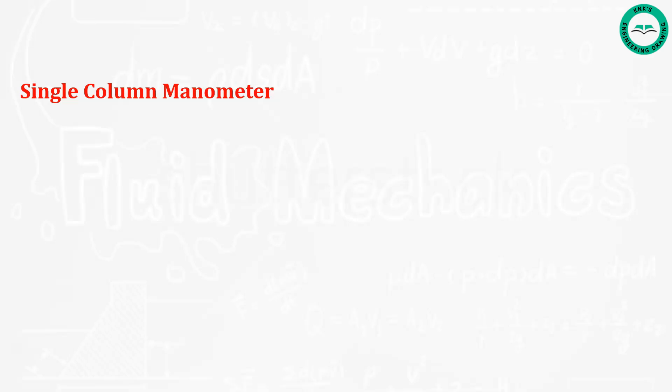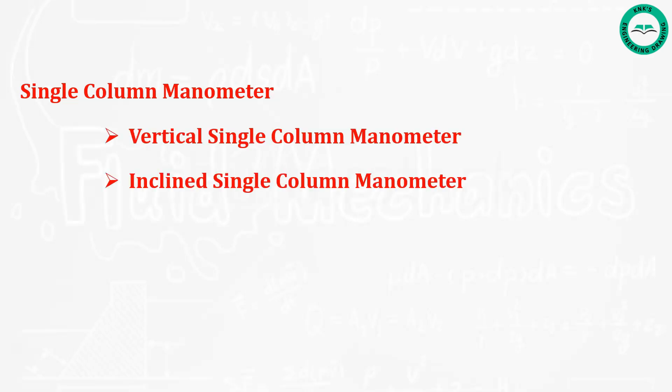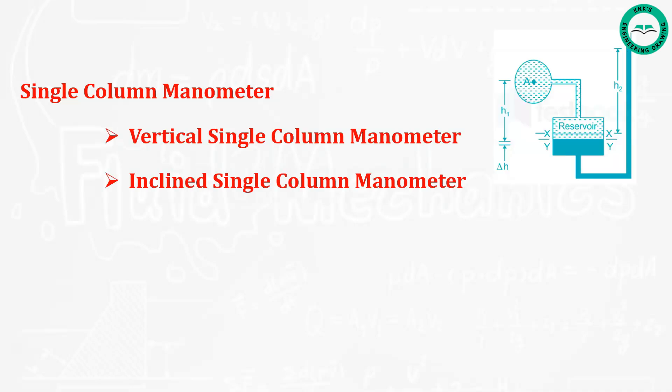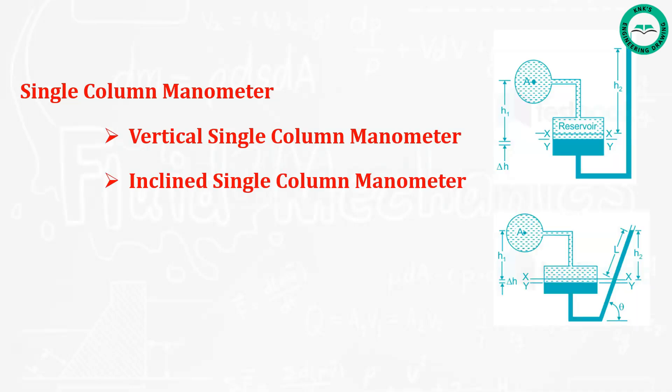Hence the pressure is given by the height of the liquid in the other limb. The other limb may be vertical or inclined, so there are two types of single column manometer: the vertical single column manometer and the inclined single column manometer.